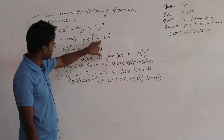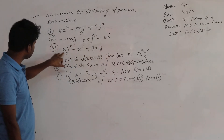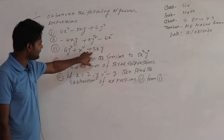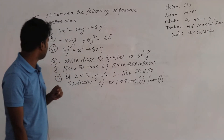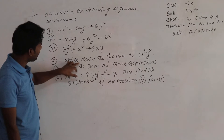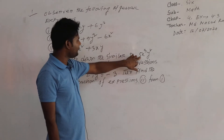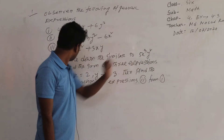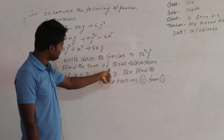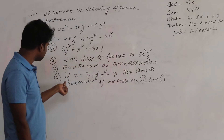Question number 1: observe the following algebraic expressions. Expression 1: 4X² minus 5XY plus 6Y². Expression 2: minus 4XY plus 9Y² minus 6X². Expression 3: 6Y² plus X² plus 3XY.